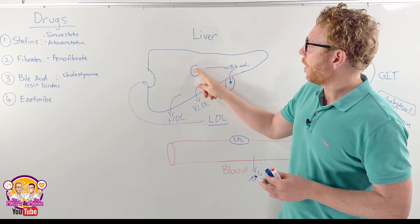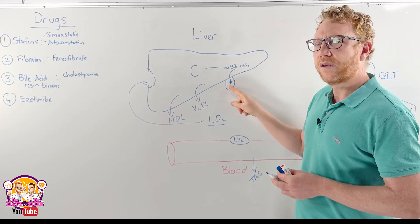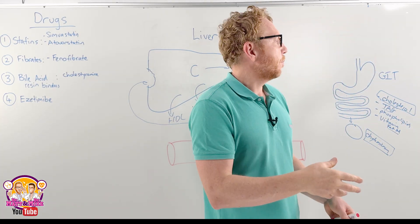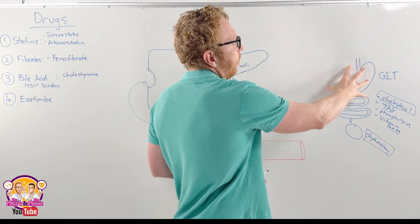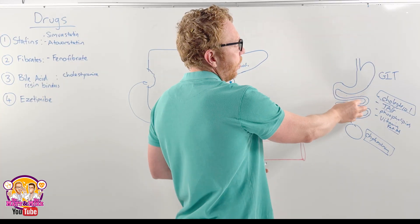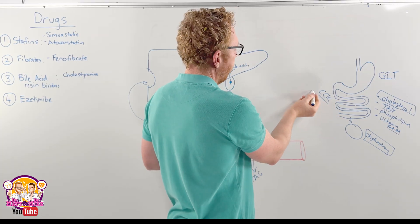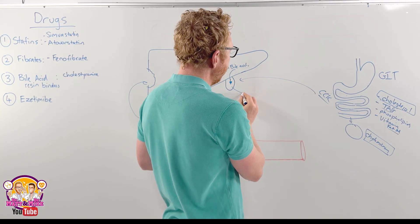So cholesterol is modified into bile acids which is then stored in the gallbladder. And when we eat, particularly fatty foods, the food moves through, it stimulates a hormone known as CCK, cholecystokinin, which stimulates the gallbladder to release bile.